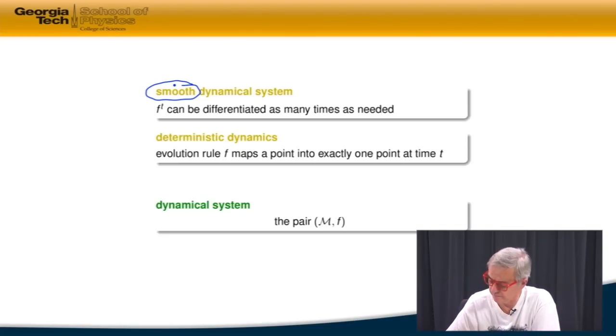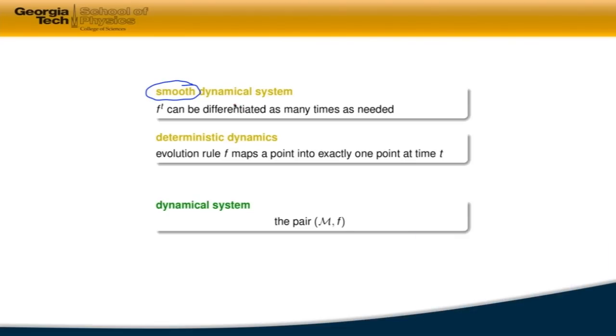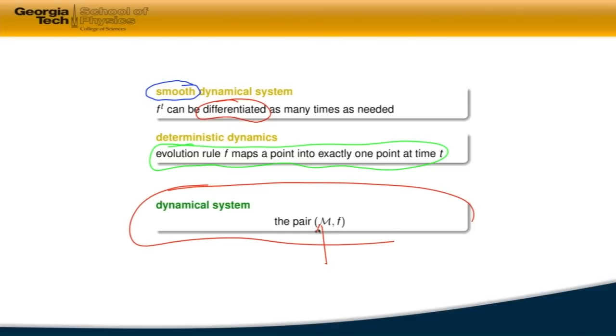Mathematically, what we say is that we want the system to be differentiable as many times as needed. So that brings us to being able to define deterministic dynamics. And deterministic dynamics is state space plus evolution rule, which has unique future.